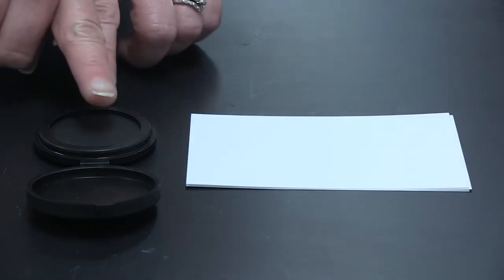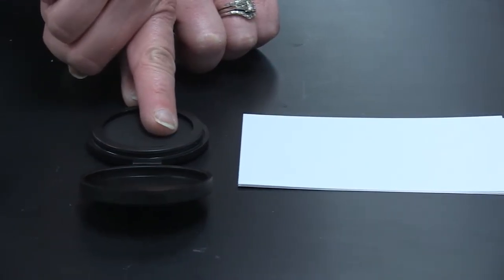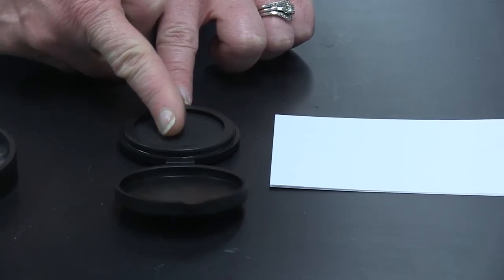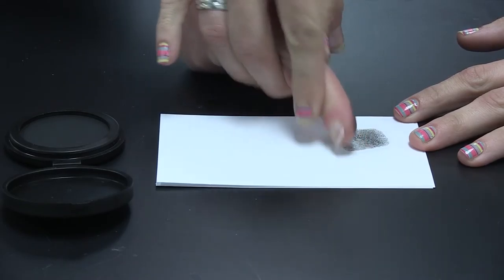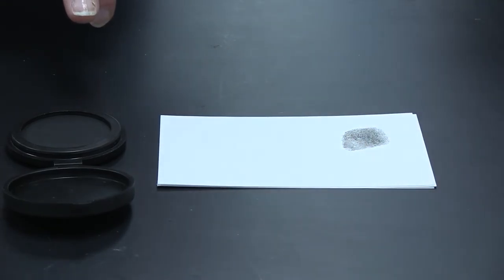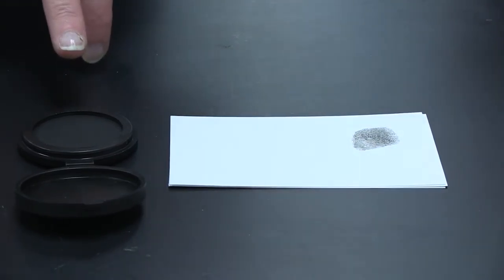And then what you'll do is you'll take your finger and you'll just roll it in the ink, and you'll have your partner take it and firmly press down and roll the finger on the 3x5 index card.